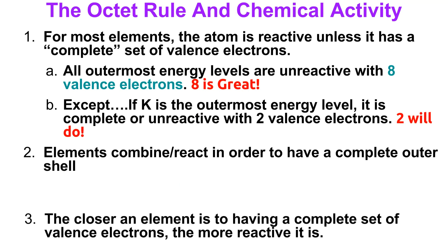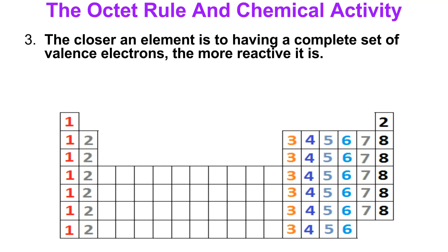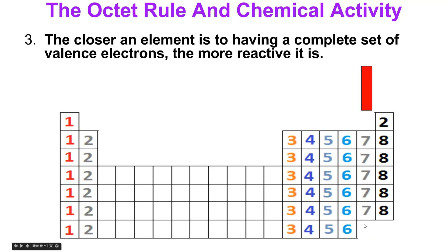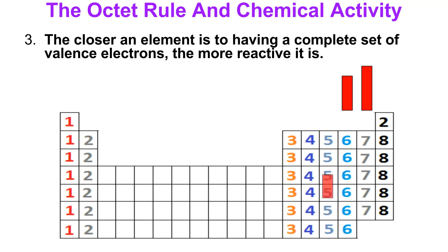The closer an element is to having a complete set of valence electrons, the more reactive it is. Group 18 is unreactive. Group 17 is very, very close to having a complete set, so it is extremely reactive. Group 16 must gain two, so it's still pretty reactive but less than group 17. Group 15 has to gain three — that's tougher, so it's a little less reactive. Group 14 has to gain four — a little less reactive still.